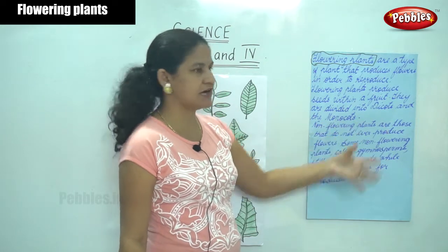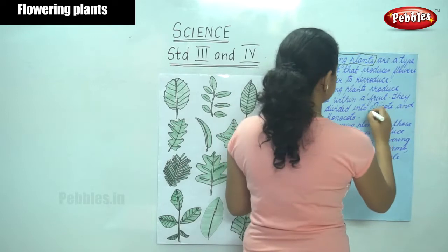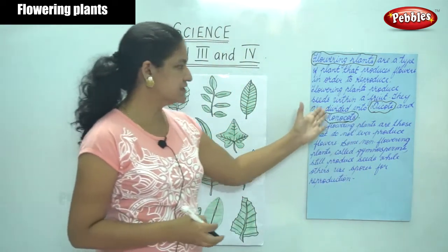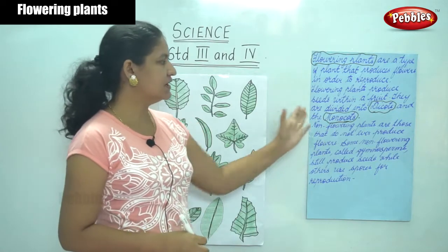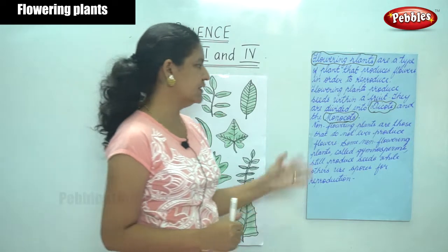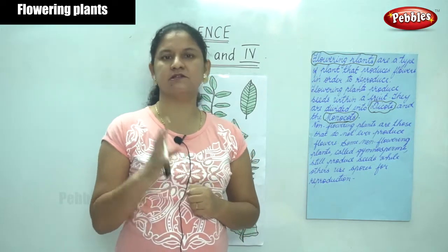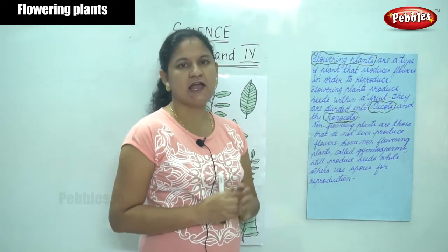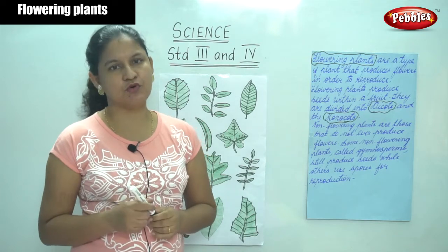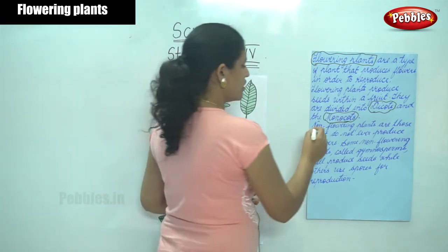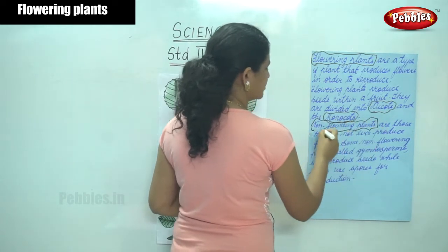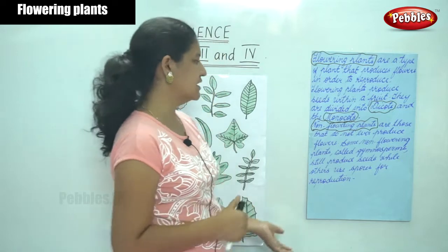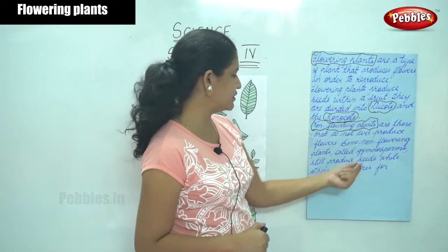Flowering plants are divided into dicots and monocots. The next category is non-flowering plants. By the name itself we can conclude that flowering plants produce flowers, and non-flowering plants do not produce flowers. So non-flowering plants are those that do not produce flowers at all.